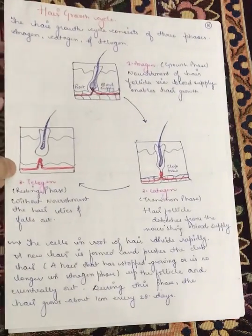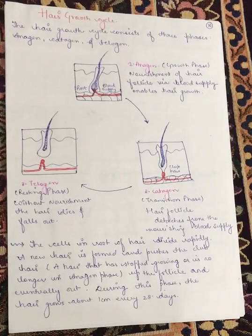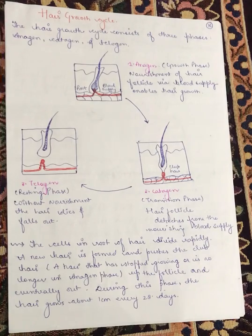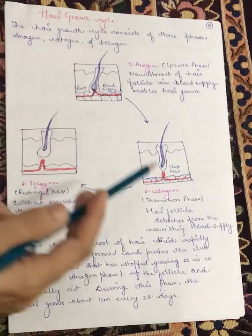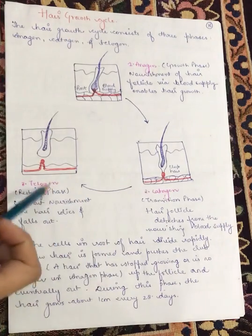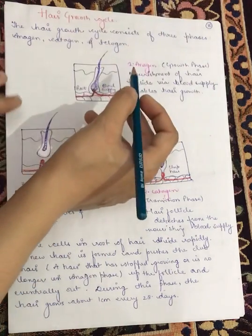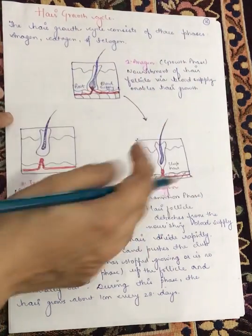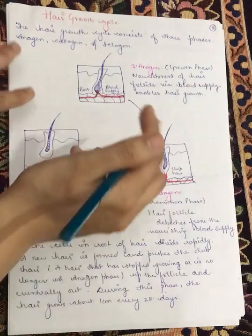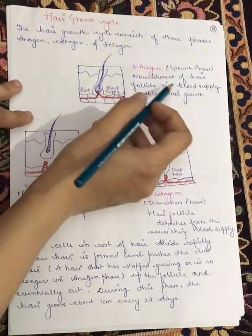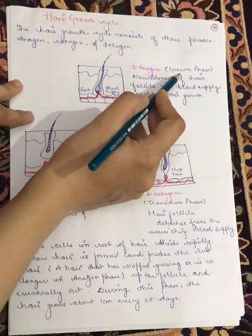Now we will look at the hair growth cycle. Our hair growth cycle is divided into three phases: the first is anagen, the next is catagen, and the third is telogen.